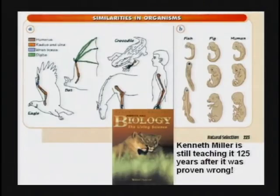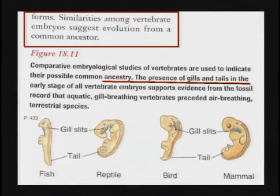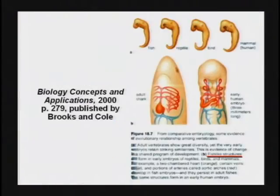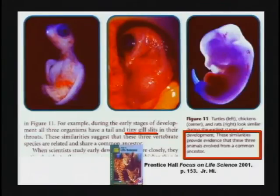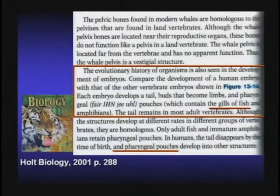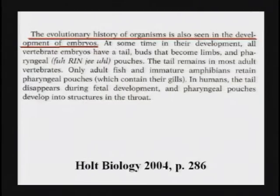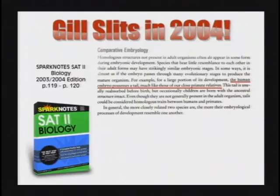A 2005 textbook from Chickasha, Oklahoma — I got corrected during the break — still teaching the baby has gill pouches. Gill slits on the embryo — they're teaching this in textbooks all over the world, only proven wrong since 1875. Get it out of the book. Tear the page out. It's a no-brainer. Tear out the page. It's not true.